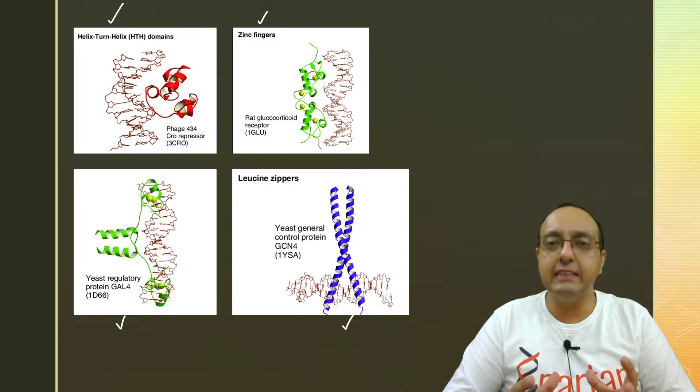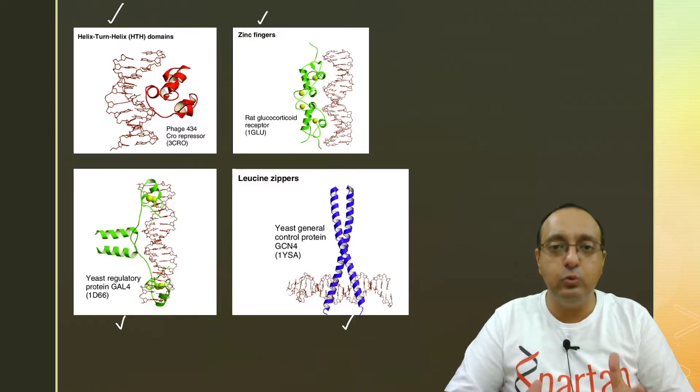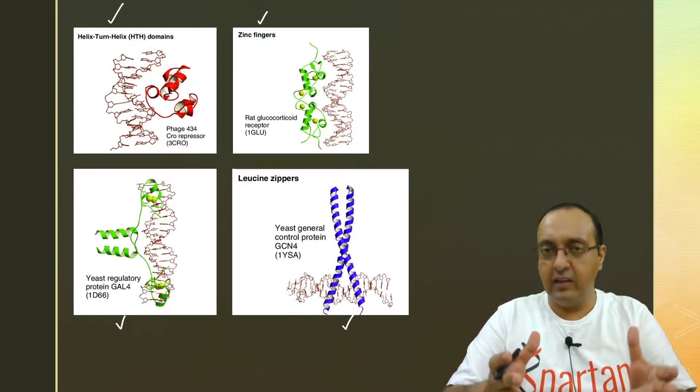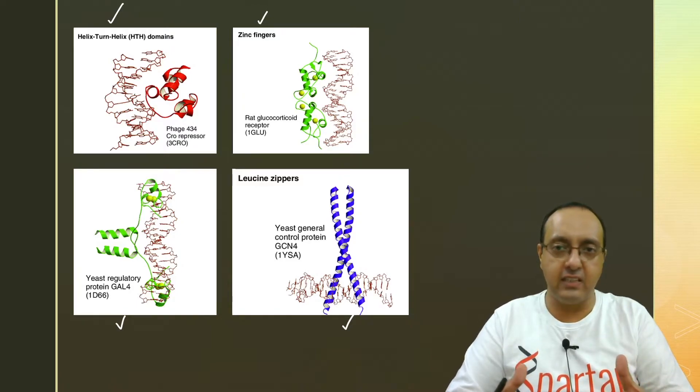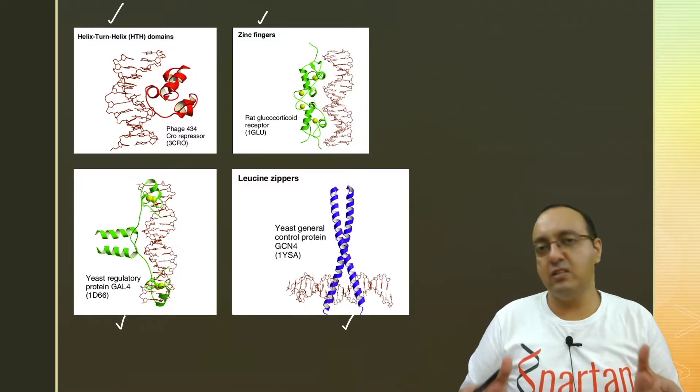So characterizing this takes a lot of time, takes a lot of research. But one of the first clues that a protein can be bound to DNA comes from studies like EMSA or electrophoretic mobility shift assay. Although the name sounds very long, but the concept is pretty simple.